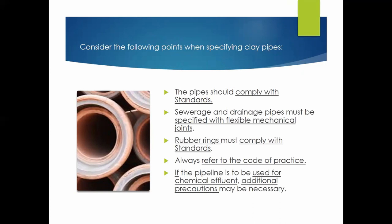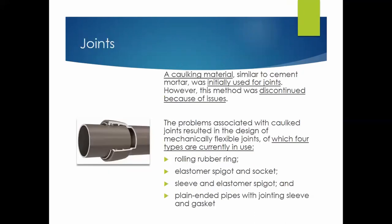When specifying clay pipes, they should comply with the relevant standards. They are specified with flexible mechanical joints, and rubber rings must comply with their own standards. They always refer to the code of practice, and if they are used for chemical effluent, additional precautions may be necessary. Joints were initially made with a caulking material, but that has been discontinued.